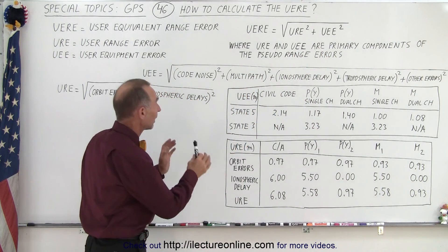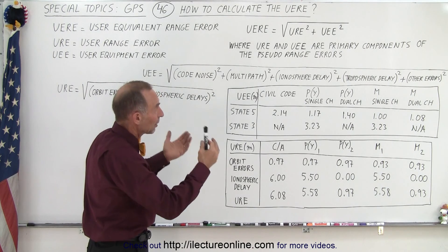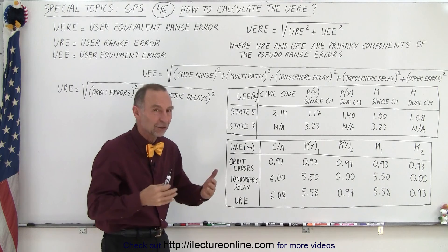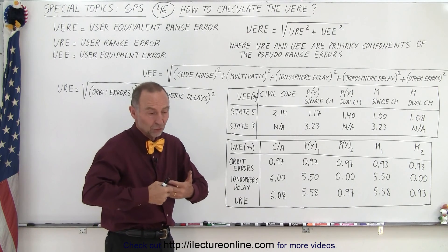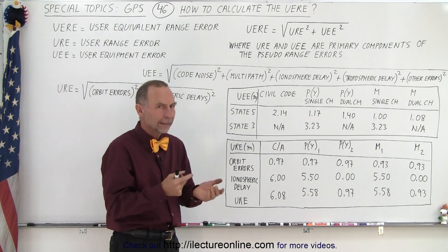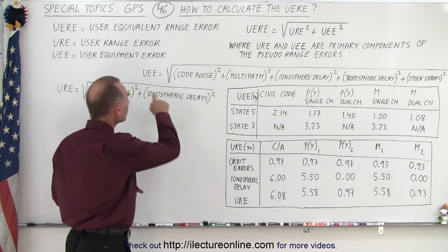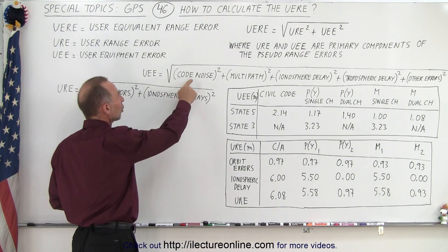Now, it turns out that the URE and the UEE are primarily components of the pseudo-range errors, the errors that come up when we make the pseudo-range measurement, and then we, of course, need to adjust it for all these parameters.